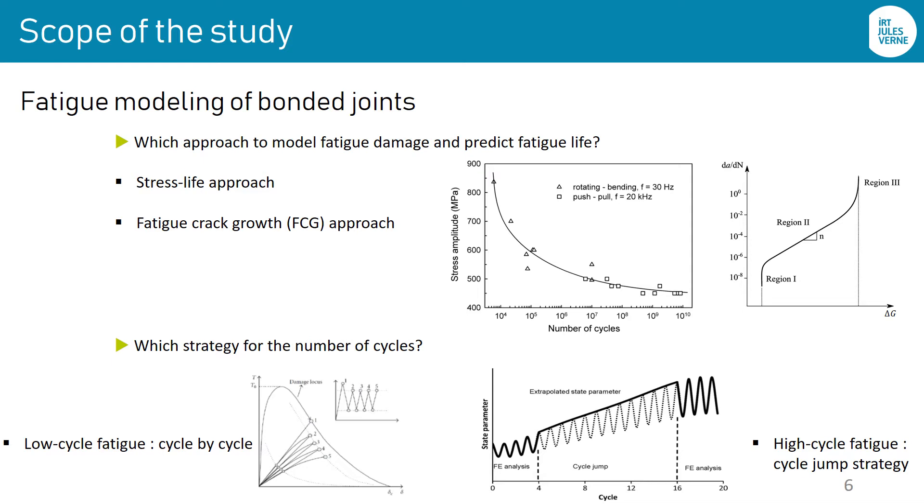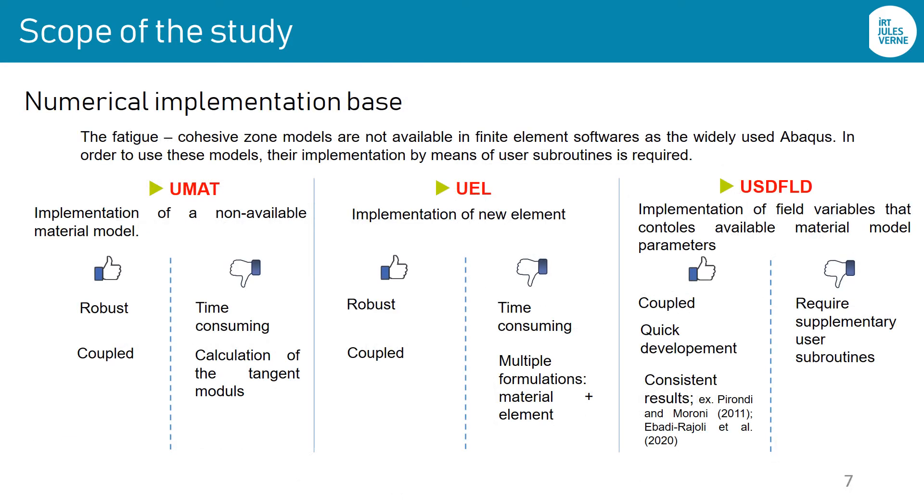If the analysis consists of low cycle fatigue, the full number of cycles could be taken into account. On the other hand, if we deal with high cycle fatigue, a cycle jump strategy should be selected in order to reduce the computation cost of the analysis. However, the cycle increment recording should be controlled in order to obtain consistent extrapolation.